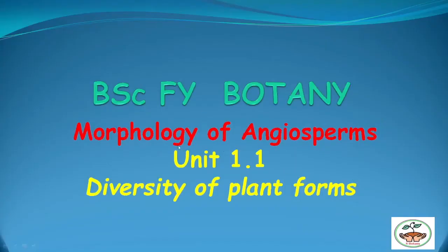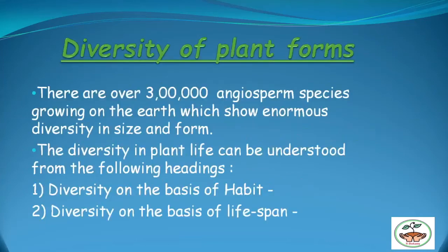Welcome to Yes Spot. Today we are going to see the morphology of the angiosperm — the diversity of the plant form. In the last video we have seen the basic body plan of the flowering plant. There are over 30,000 angiosperm species growing on the earth, which show enormous diversity in size and forms. The diversity in plant life can be studied from the following headings: diversity on the basis of habit, and diversity on the basis of the plants. Today in this video we will see diversity on the basis of habit.